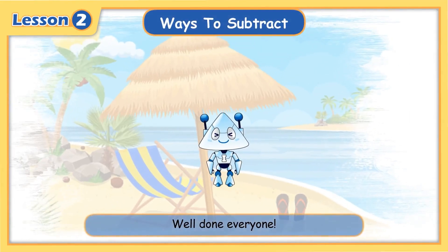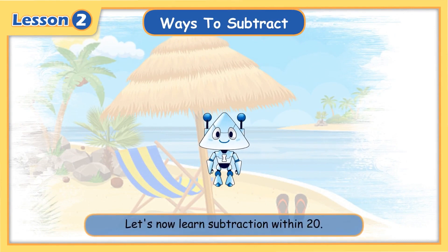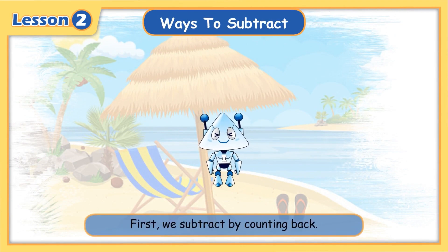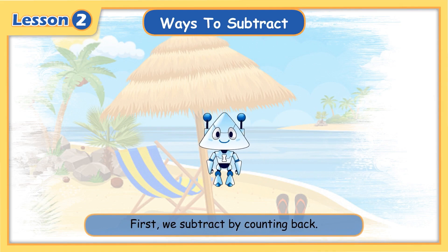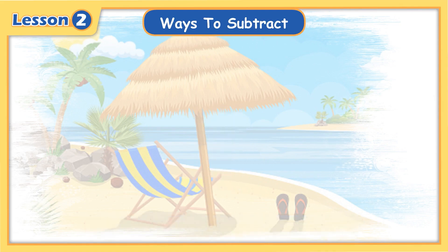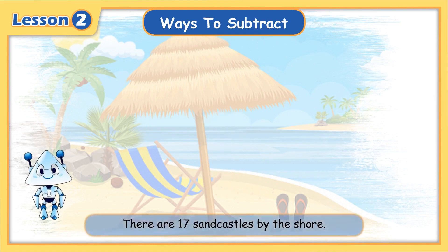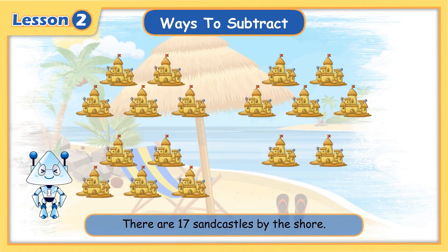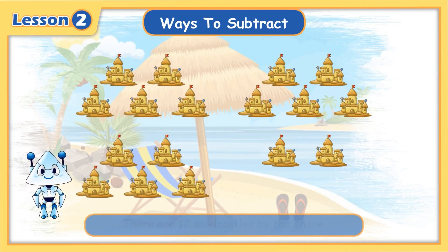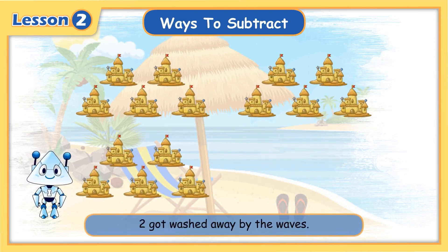Well done everyone! Let's now learn subtraction within 20. First, we subtract by counting back. There are 17 sandcastles by the shore — two got washed away by the waves.